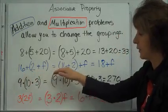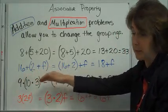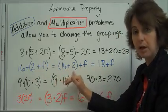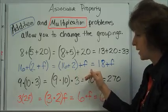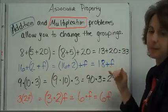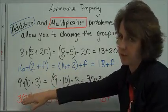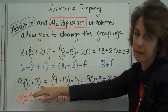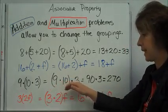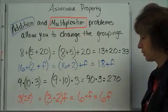What if we have it with variables? Well, 2 plus f is not something I can solve because I don't know the value of f. But I can change the groups to do (16 plus 2) plus f, which then equals 18 plus f. This is called simplifying an expression. Here's a multiplication example: 9 times 10 times 3 — maybe I don't want to do 30 times 9. But changing the group to (9 times 10) times 3 gives 90 times 3, which is 270.